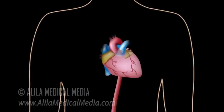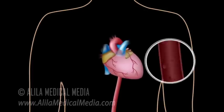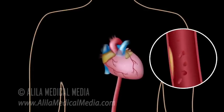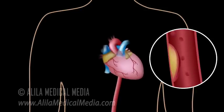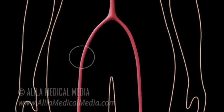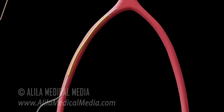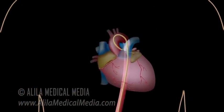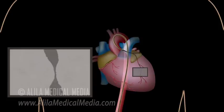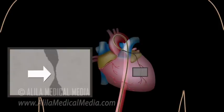Coronary angioplasty is a non-surgical procedure used to open narrowed or blocked coronary arteries. It can also be performed as an emergency treatment for myocardial infarction. The first part of the procedure is to localize the site of blockage — this part is called cardiac catheterization. A guiding catheter is inserted through the femoral artery at the groin and threaded all the way to the aorta. The tip of the catheter is placed at the beginning of the coronary artery to be investigated. A radio-opaque dye is injected through the catheter into the coronary artery, enabling real-time visualization of the artery using x-ray imaging. A narrowed part of an artery would appear as a bottleneck on an x-ray image. After the location of the narrowed artery is identified, angioplasty can begin.